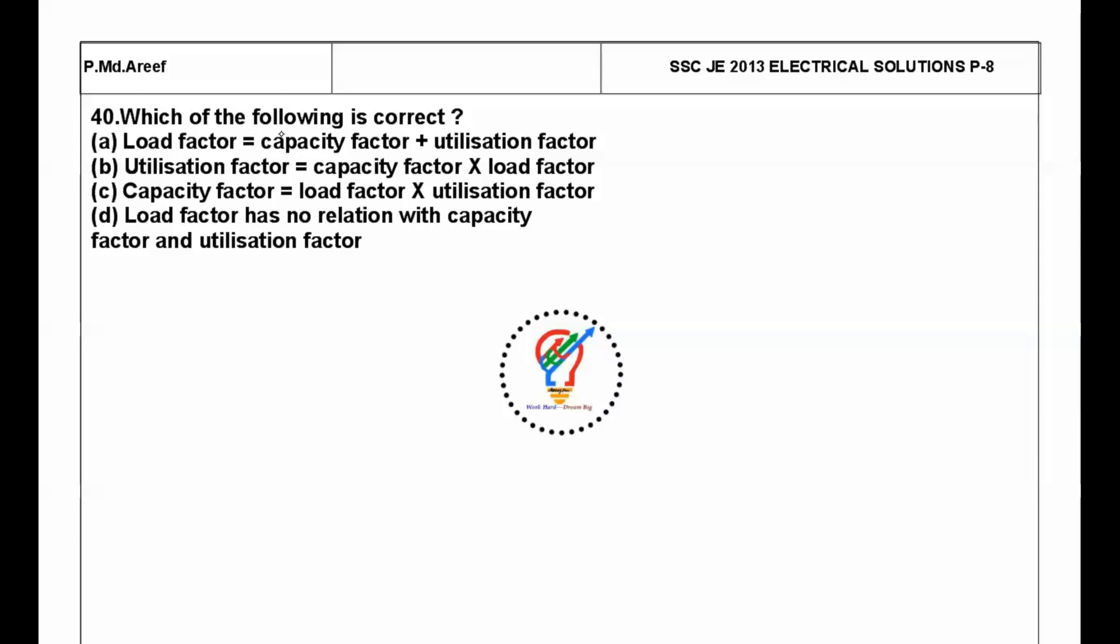These are repeated questions from our previous JE solutions. Which of the following is correct? Capacity factor CF equals average demand by installed capacity. Load factor equals average demand by maximum demand. Utilization factor equals maximum demand by installed capacity. From this, capacity factor CF equals AD by IC, which is AD by MD times MD by IC.